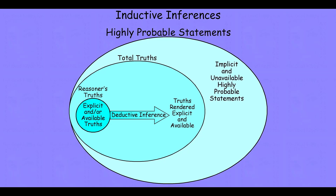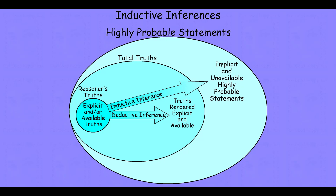Inductive inference is amplitative in that it goes beyond the class of things that have to be true given the reasoner's initial information. It does this by leveraging some feature of the world and introducing a degree of epistemic risk, trying to generate information that isn't guaranteed to be true given the initial information, but is nevertheless likely to be true given that initial information. So an inductive inferential transformation will go from explicit and available information and try to generate statements that are highly likely to be true, but not guaranteed.